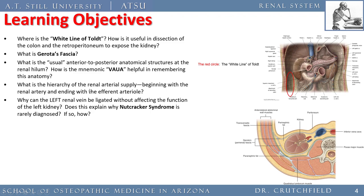What is the hierarchy of the renal blood supply beginning with the renal artery and ending with the efferent arteriole? The renal artery divides into lobar branches, then lobular branches, then various arcades, until it ends in the efferent arteriole and the portion that makes up a glomerulus.